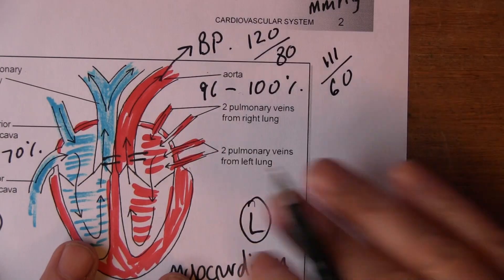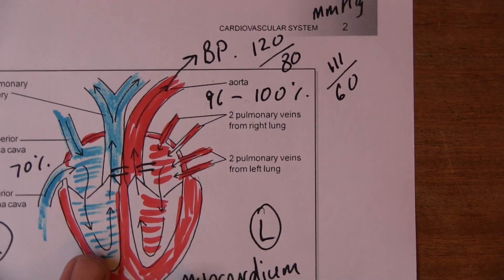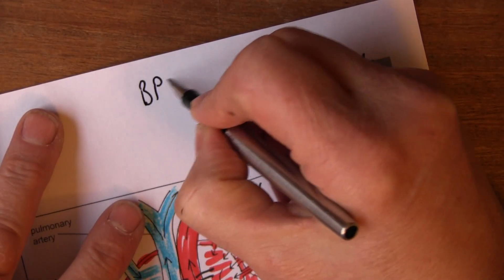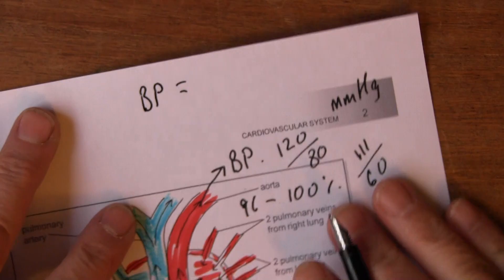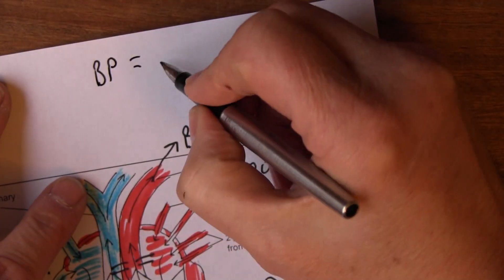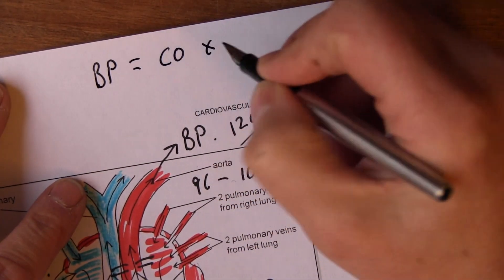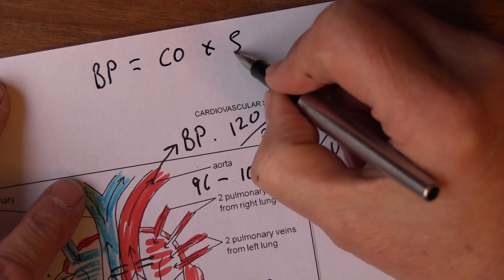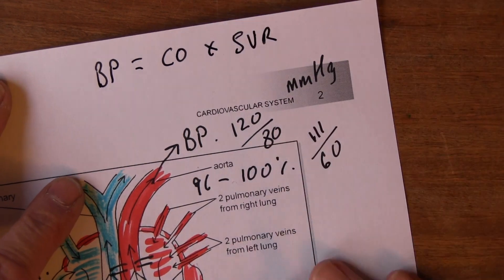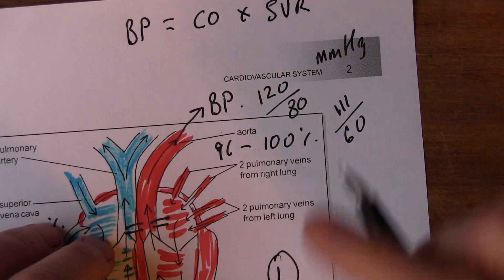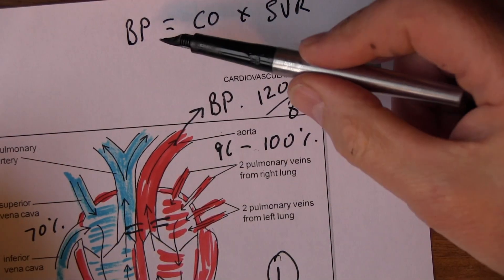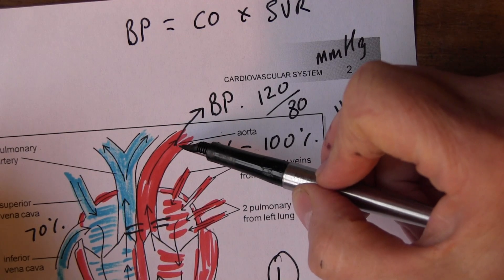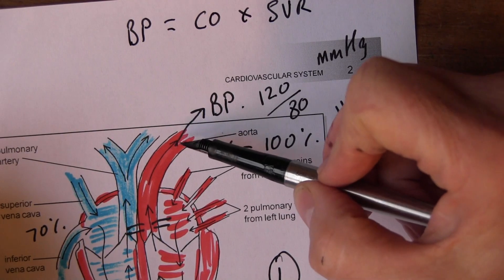Blood pressure is the pressure in the systemic arteries and is determined by cardiac output multiplied by systemic vascular resistance. Blood pressure equals the pressure of the blood against the walls of the vessel in which it's contained.